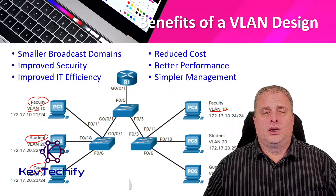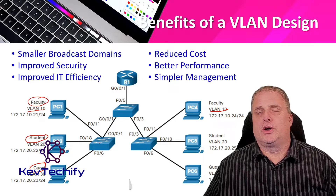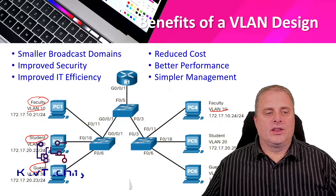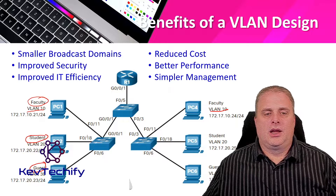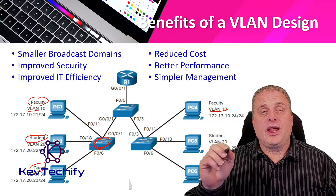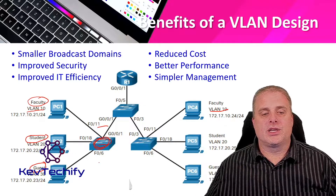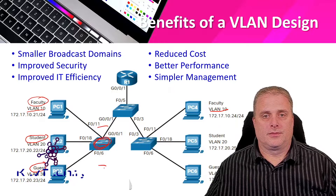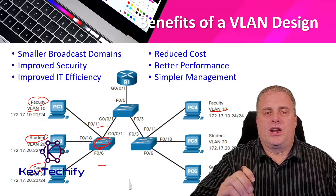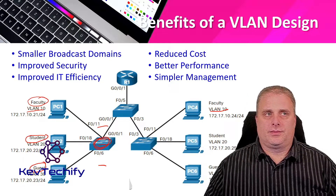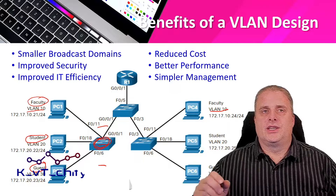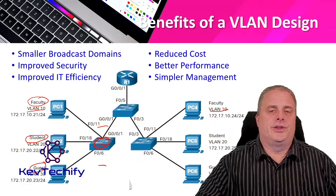VLANs also reduce costs — they allow us to use one switch for multiple VLANs. Without VLANs, each LAN would need its own switch. With three VLANs on one side of the network, we can use a single switch instead of three, which would be three times the cost. We get better performance because smaller broadcast domains mean less traffic and less congestion, improving our bandwidth. And finally, simpler management — smaller groups with similar applications and network access allow you to do your job more efficiently.